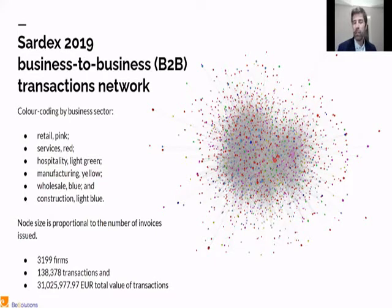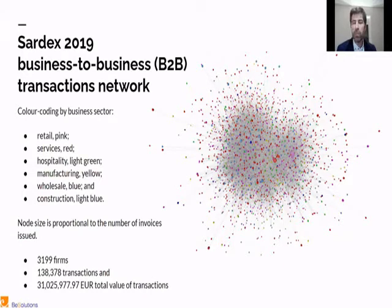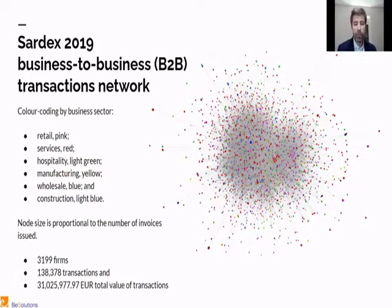This is a category of networks that kind of defy attempts to show their structure. It's very chaotic in nature. The colors of the nodes depict the industry, so you see that companies from the same industry can be found all over — there is no order. The network is relatively big: we have 3,199 firms and a huge number of transactions, and the volume of transactions is also relatively big.